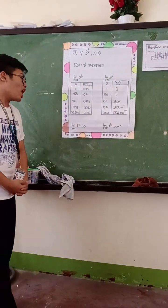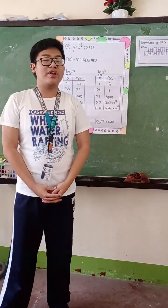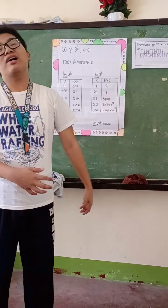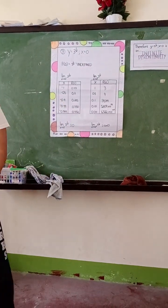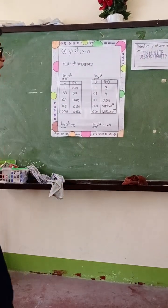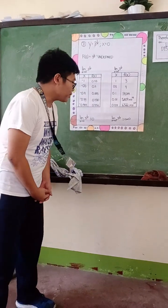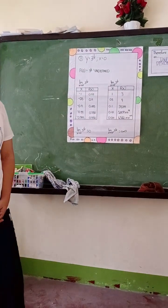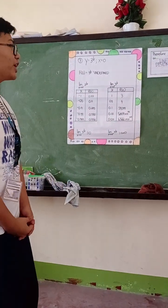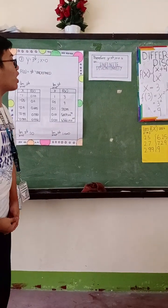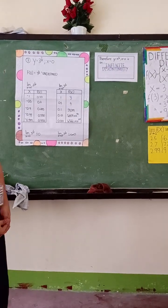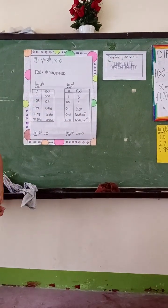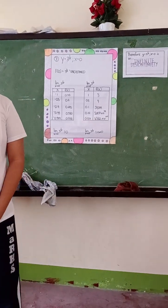The limit of the function 3 raised to 1 over x as x approaches 0 to the right is infinity. Therefore, our function y = 3 raised to 1 over x at x = 0 is an infinite discontinuity.